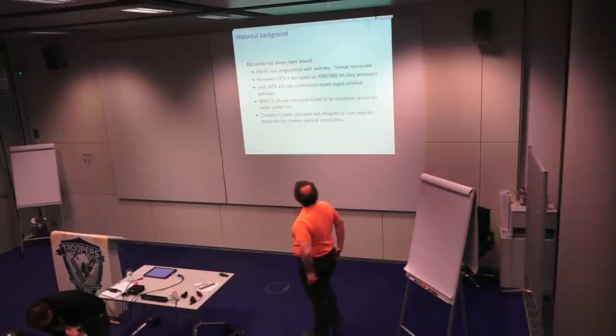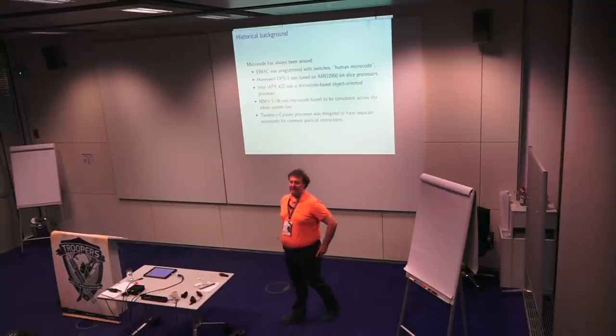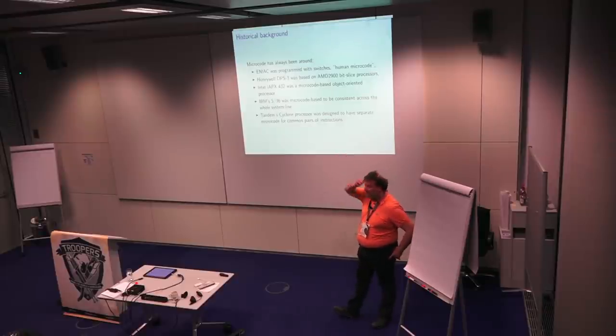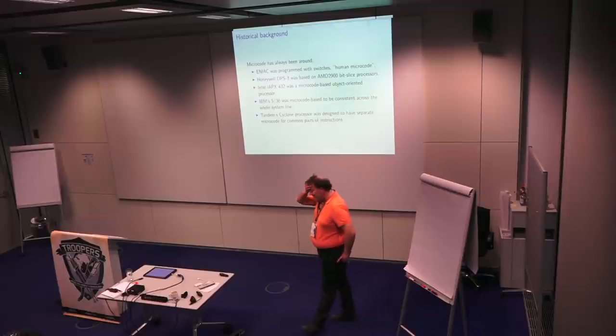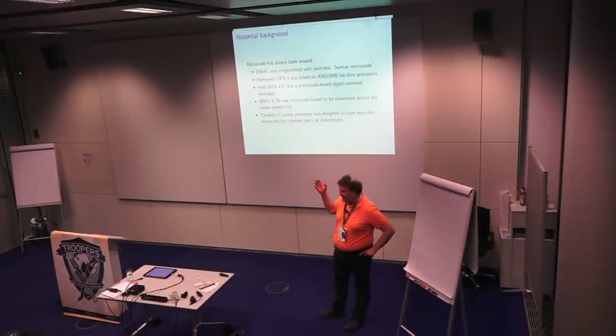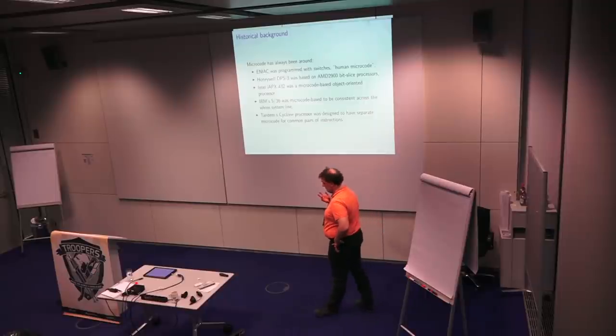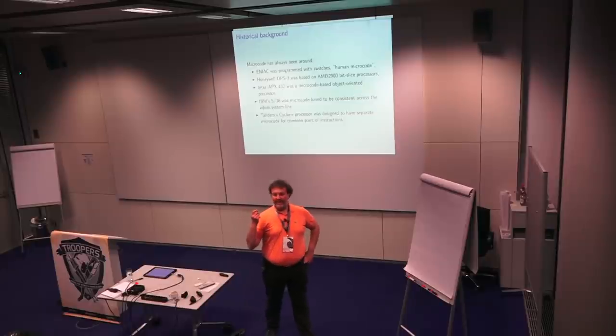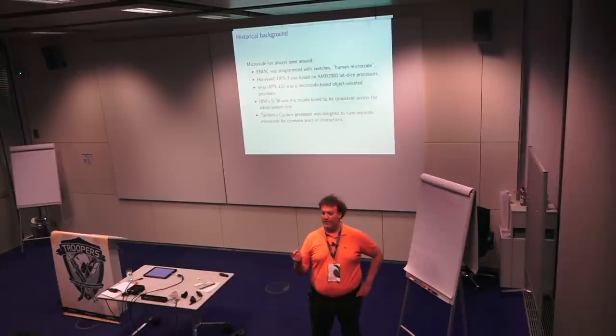Then there was a very, very little known processor from Intel called the 432. Now, the 432 was a fascinating processor. It was actually made of two processors, which was one of the key issues about it. It failed completely. Now, why did it fail? It failed for two good reasons. Well, not very good reasons, but for two reasons. The first reason it failed was precisely because it was made of two processors. The two processors could not communicate fast enough between them.